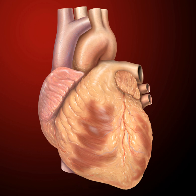The right atrium and the right ventricle together are sometimes referred to as the right heart. Similarly, the left atrium and the left ventricle together are sometimes referred to as the left heart. The ventricles are separated from each other by the interventricular septum. The cardiac skeleton is made of dense connective tissue and gives structure to the heart. It forms the atrioventricular septum which separates the atria from the ventricles, and the fibrous rings which serve as bases for the four heart valves. The cardiac skeleton also provides an important boundary in the heart's electrical conduction system since collagen cannot conduct electricity. The interatrial septum separates the atria and the interventricular septum separates the ventricles. The interventricular septum is much thicker than the interatrial septum, since the ventricles need to generate greater pressure when they contract.